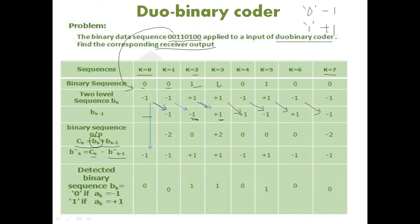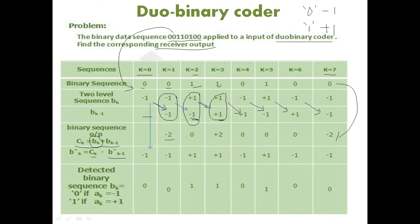The operation between bk and bk minus one is addition — not modular-two addition, but normal summation, since the binary sequences have been converted to voltage levels. So minus one plus minus one gives minus two; plus one plus minus one gives zero; plus one plus one gives plus two. The transmitted sequence ck takes only three voltage levels: minus two, zero, and plus two.